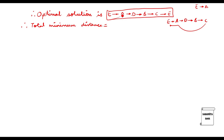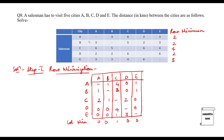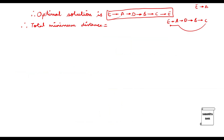We read the distances from the main table: E to A is three, A to D is two, D to B is two, B to C is five, and C to E is four. We do not add E to E because it is restricted. The total minimum distance is three plus two plus two plus five plus four, which equals 16 kilometers. That is how you solve a traveling salesman problem.